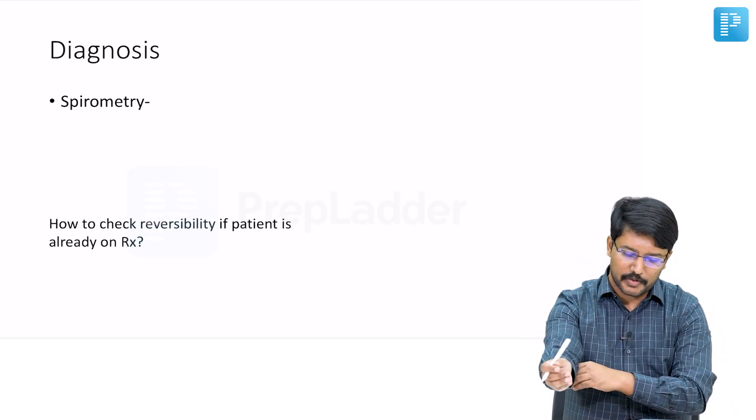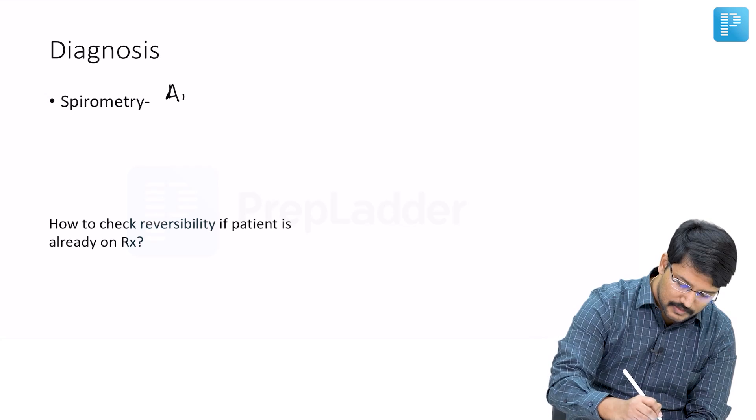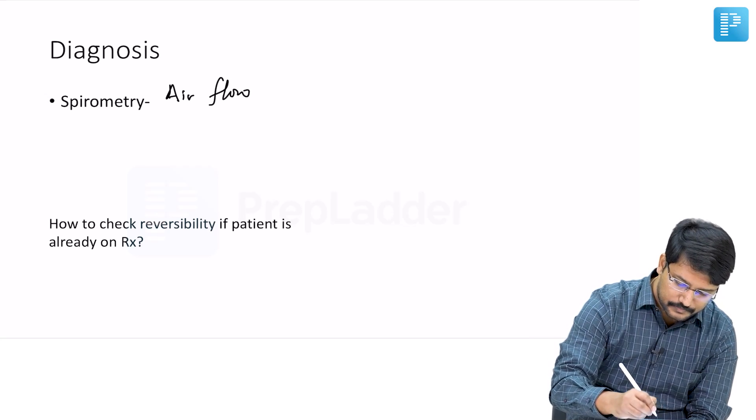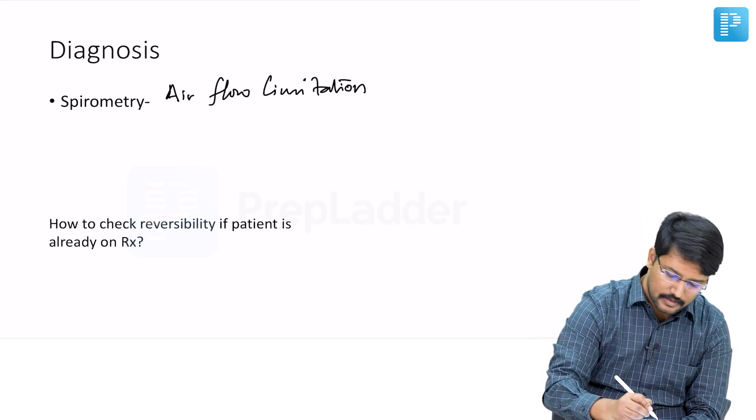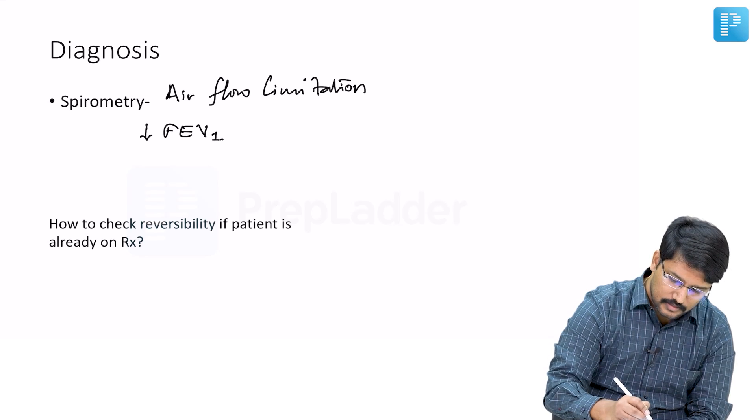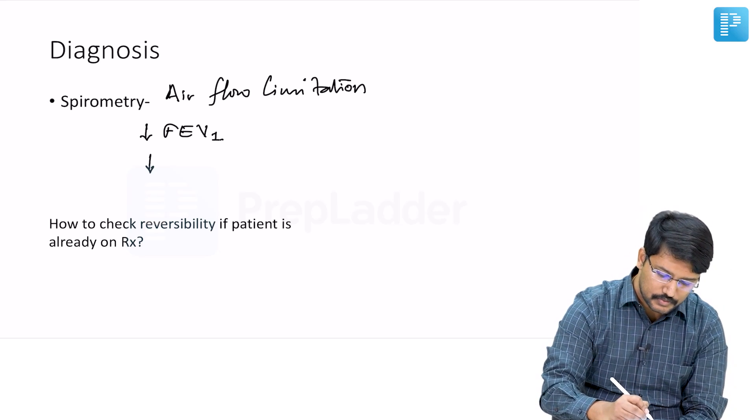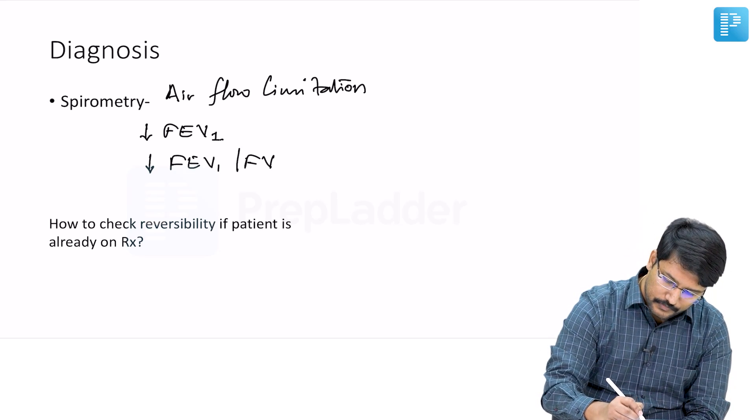What are the spirometric evidence that we are looking for? One, the hallmark as we discussed is air flow limitation, and this is evidenced by reduced FEV1 levels, then reduced FEV1 by FVC levels.